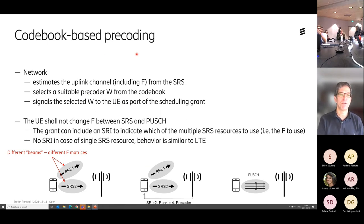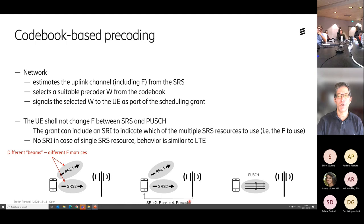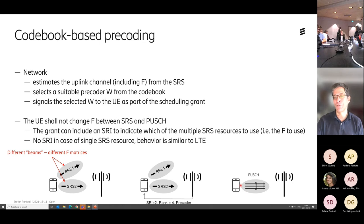For codebook-based precoding in the uplink, I ask the UE to send sounding reference signals — maybe two different sets corresponding to two different beam directions. I measure at the base station, take a decision, and send an SRS resource indicator (SRI) index — say number two — meaning I want the UE to use whatever F matrix it used when it sent SRS number two. Then I tell it that rank four was good and specify the precoded W index. The UE then transmits a rank-four transmission in that beam direction using the precoder the base station told it to use.